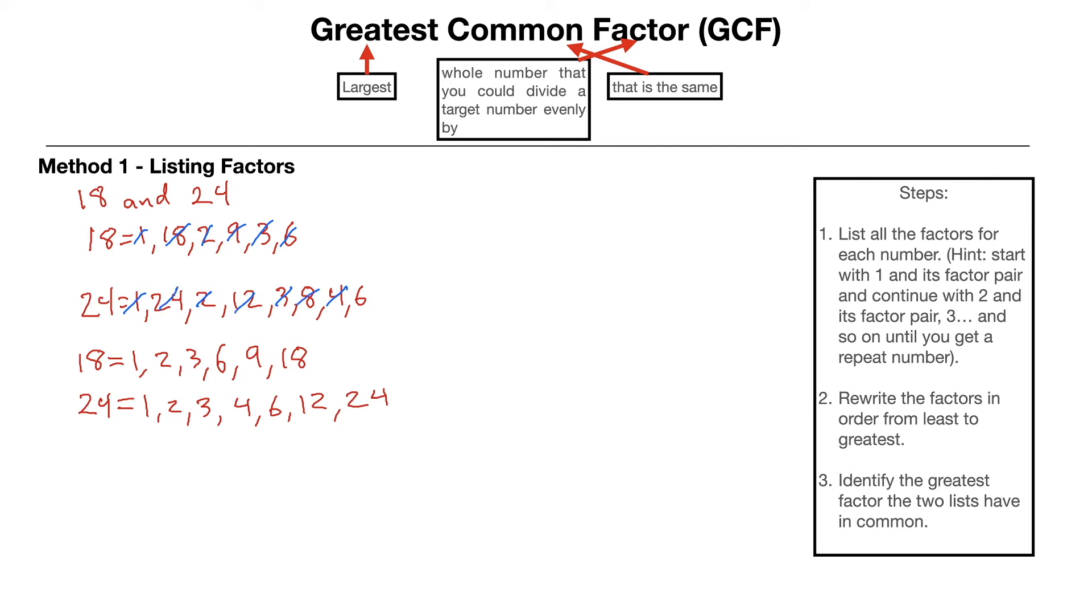And so now we're going to move on to step number 3, which is over here. We're going to identify the greatest factor that the two lists have in common. So we're just going to look at these two lists. And we might notice that, for example, they both have a 3, but that's not the greatest number. The greatest number that is in both lists right here is going to be the 6. That means that your GCF, or your greatest common factor, is going to be the number 6. That would be your answer for that problem.